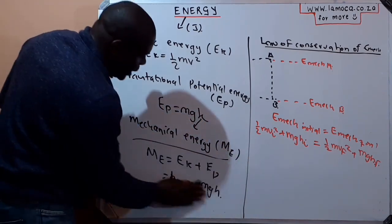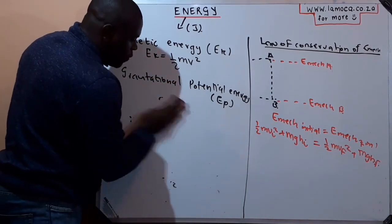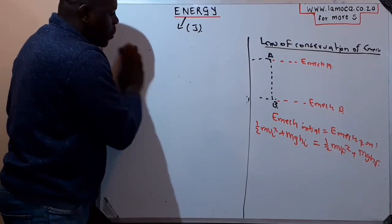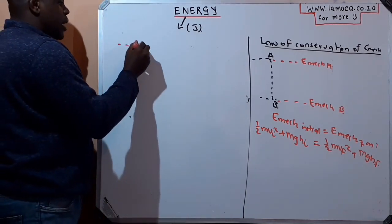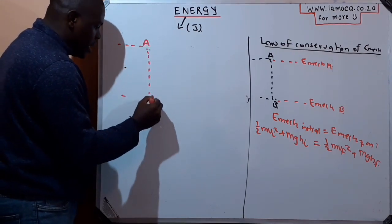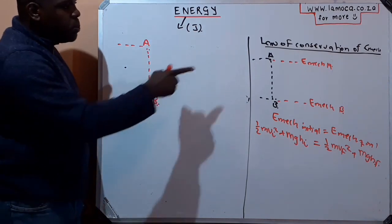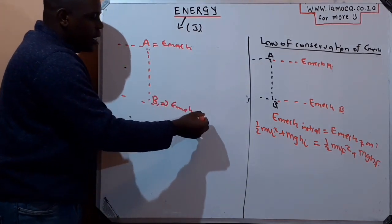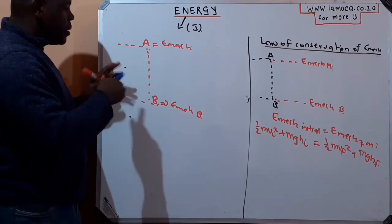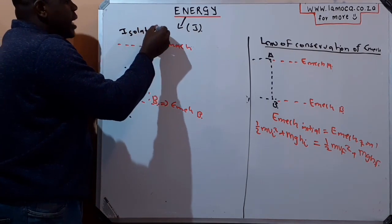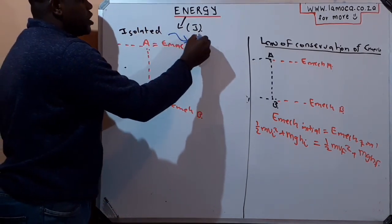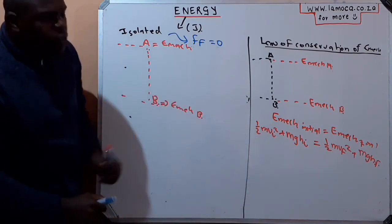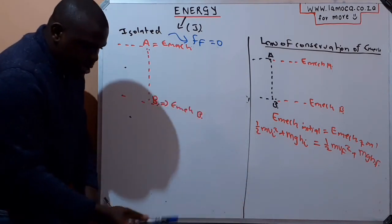Let's look at a practical situation. Assume we have a ball that moves from point A to point B — we release the ball at point A and it moves until point B. We can find the Emec at A and the Emec at B. Keep in mind that this system is isolated, which is very important. If it's isolated, it means there is no friction — the frictional force is zero in this particular system.